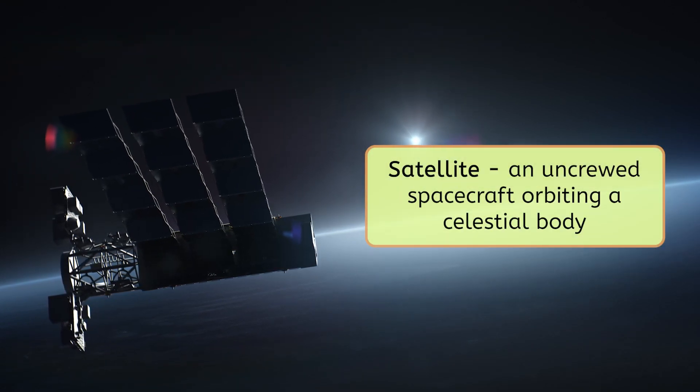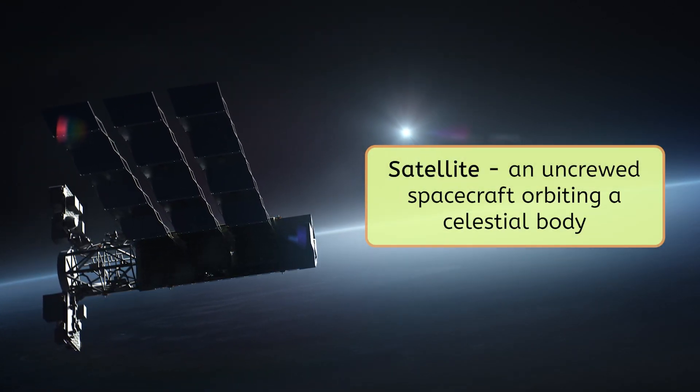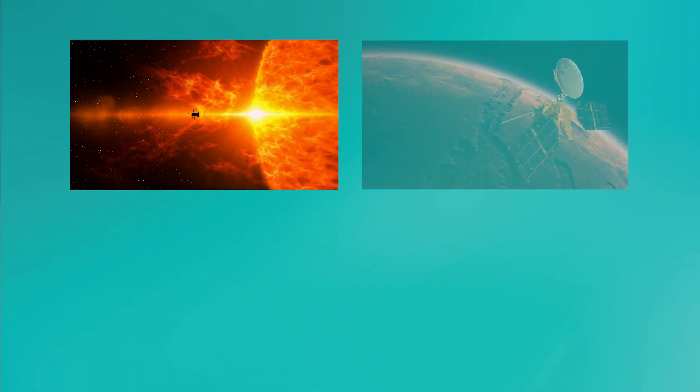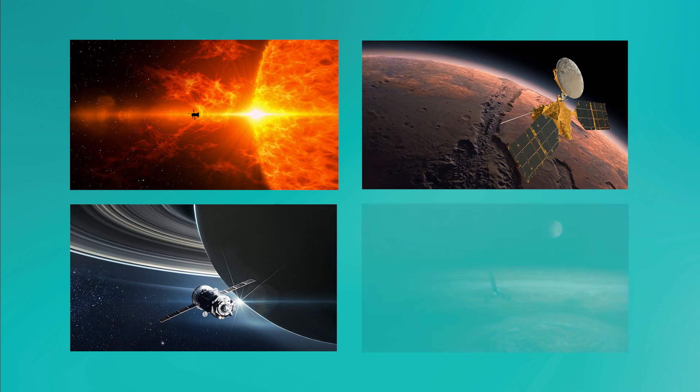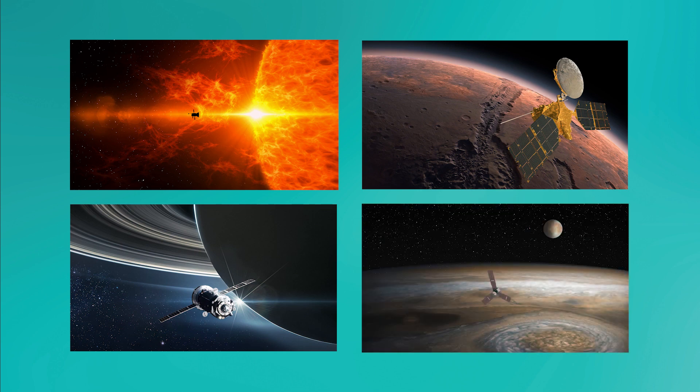These uncrewed spacecraft orbit around a celestial body. We've sent satellites to orbit the sun, the moon, and most of the other planets in our solar system. These satellites carry telescopes and other scientific equipment that we can use to study space. Since satellites stay in their orbits, they can help us gather consistent information from the same place over time.